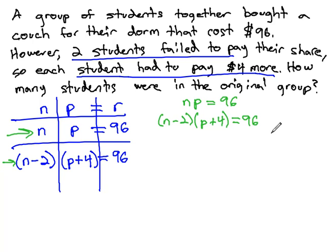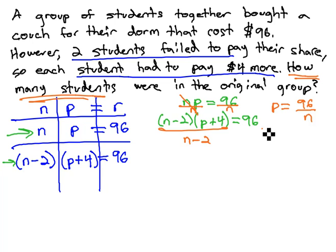We now have a simultaneous product we can solve by dividing both sides by the same factor. We divide by the factor we're looking for, and the question's asking how many students, so we're going to divide by the number, or the n factor, on the first equation, which gives us p equals 96 over n. The factor with n is n minus 2 on the other equation, which gives us p plus 4 equals 96 over n minus 2.